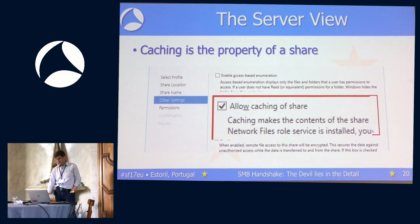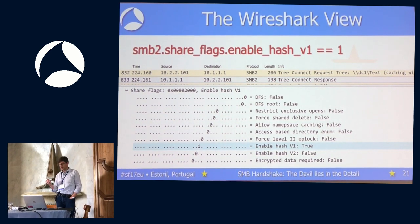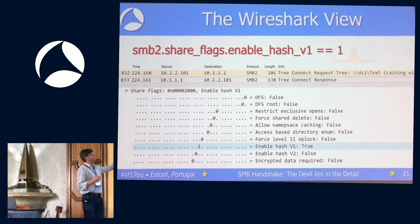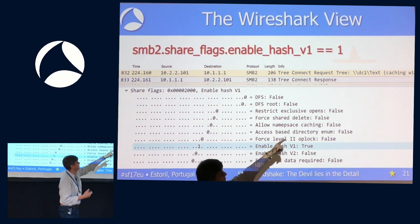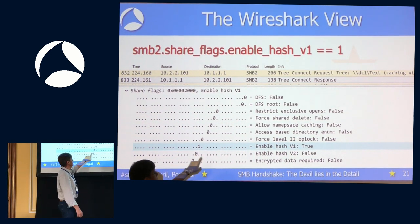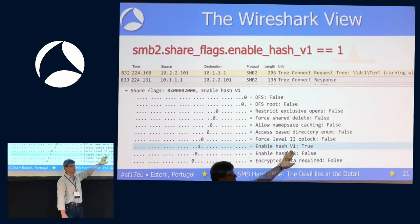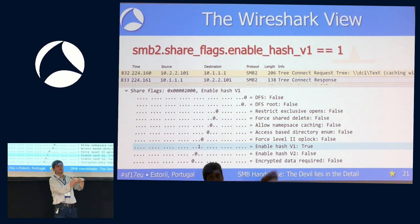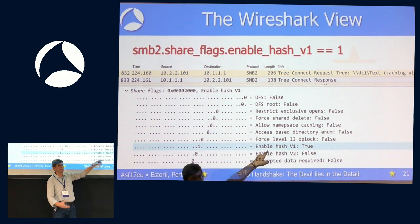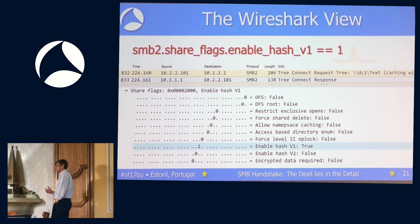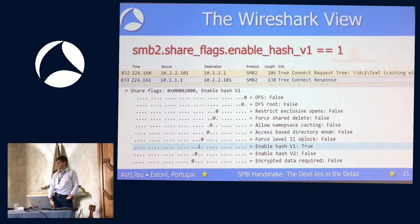Caching is part of the properties for a share. In the server's tree connect response, important configuration details are revealed. Here, the share flags show 'Enable Hash Version 1 is true,' indicating branch caching is enabled. There are two versions — enable hash version one and two — representing different implementations depending on your functional level. You can filter for this using the display filter: smb2.share_flags.enable_hash_v1.